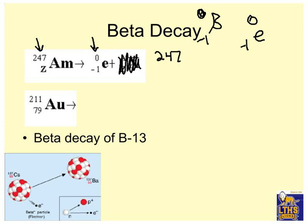So that's 247. Americium. Am is number 95. So if this is negative 1, something minus 1 equals 95. And that would be 96, which would be curium.